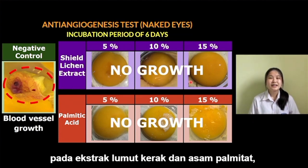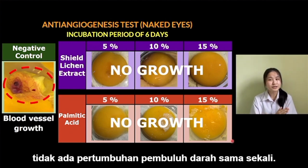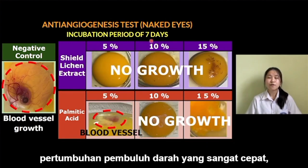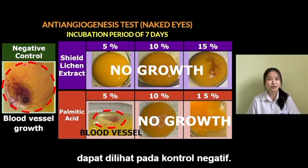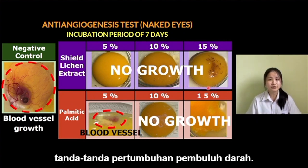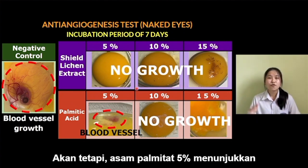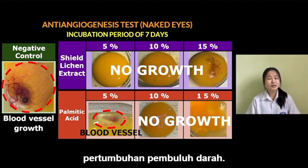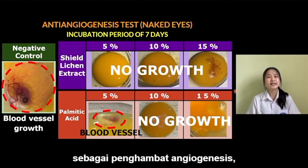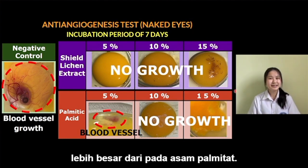Surprisingly, in the sheathlichen extract (CHLK) and palmitic acid, there's no growth of blood vessels at all. Then, for an incubation period of 7 days, a rapid blood vessel growth in the negative control was observed. Amazingly, CHLK still shows no signs of blood vessel growth. However, 5% palmitic acid exhibits the growth of blood vessels. Therefore, CHLK is more potent as an angiogenesis inhibitor, greater than palmitic acid.